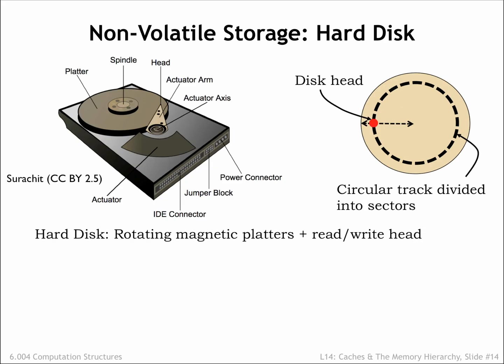A hard disk drive contains one or more rotating platters coated with a magnetic material. The platters rotate at speeds ranging from 5,400 to 15,000 rpm. A read-write head positioned above the surface of a platter can detect or change the orientation of the magnetization of the magnetic material below.